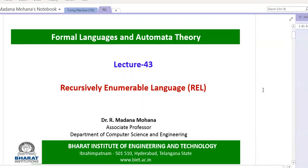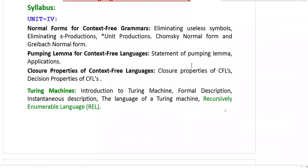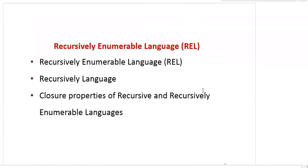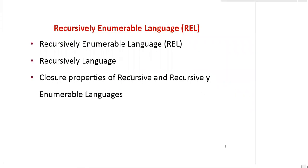In this lecture we'll discuss the various closure properties of recursively enumerable languages. Like every language, we have closure properties — in our previous lecture we discussed context-free language closure properties. Similarly, for recursively enumerable languages we also have closure properties, and here we will see the combination of recursively enumerable and recursive language.